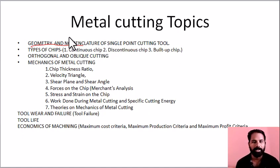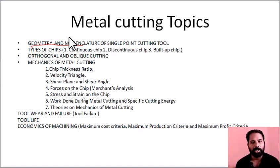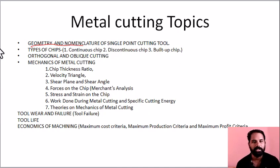We will cover the single point cutting tool and its geometry, including the rear angle, back rake angle, and side rake angle — and their effects. For rake angle, we have positive rake angle, negative rake angle, and zero rake angle. Then we look at the three types of chips: continuous, discontinuous, and continuous with a built-up edge.